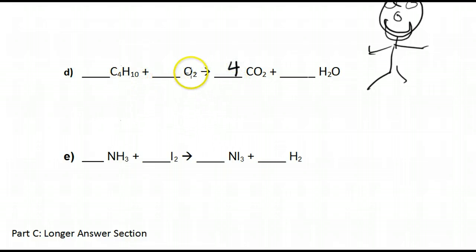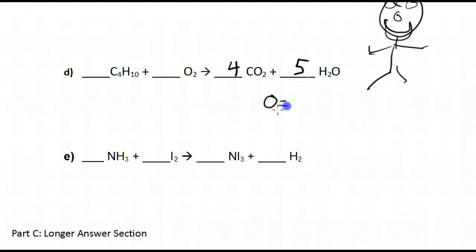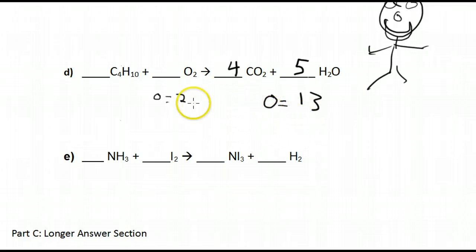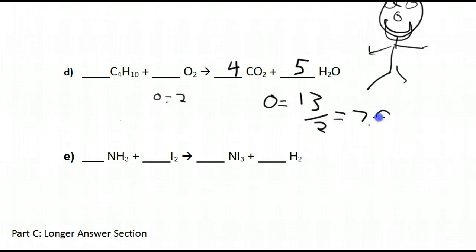We're going to do oxygen at the end, so let's go to hydrogen first: we have ten hydrogens on this side so let's put a five here to make ten on the other side. Now for oxygen, be careful because it appears in two places. The amount of O on this side will be four times two which is eight, plus five times one which is five, giving us thirteen oxygens. On the other side we have two oxygens, so thirteen divided by two is 7.5, and you can put 7.5 here.